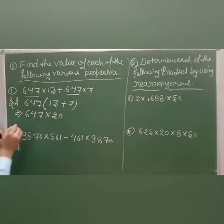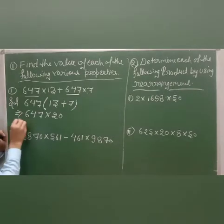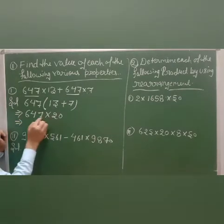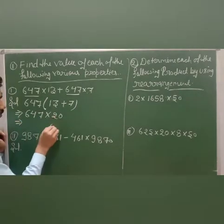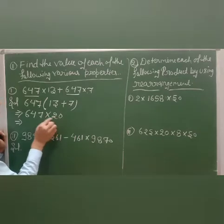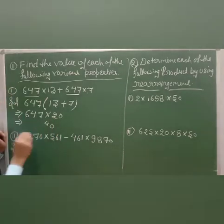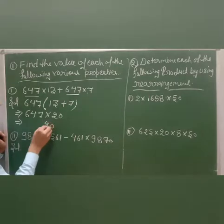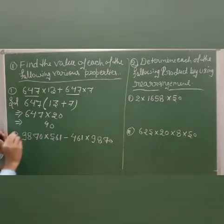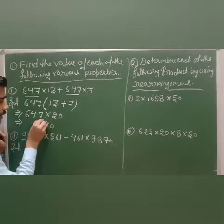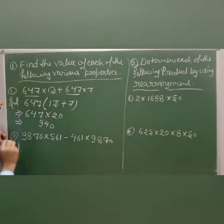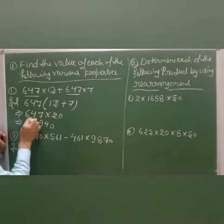Now multiply 647 by 20. Working through the multiplication: 647 into 20 gives the answer 12,940.